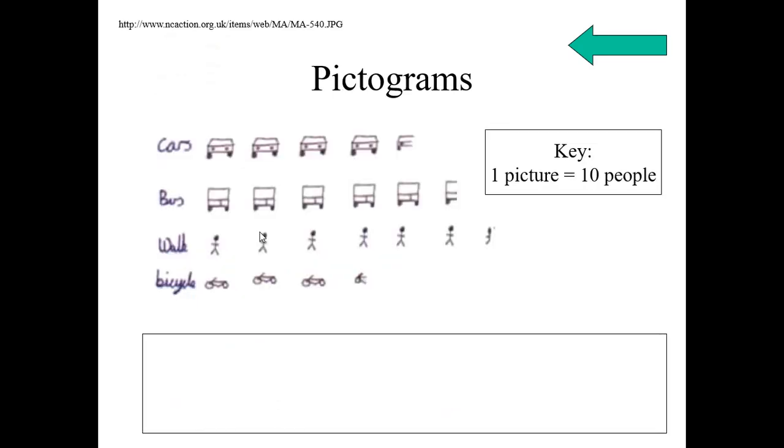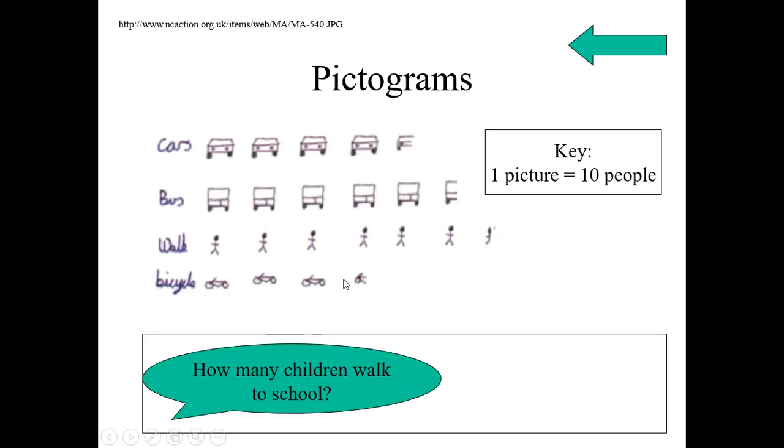Now, these are pictograms. Here, cars are drawn here and each picture is 10 people here. And buses, total 5 buses are there. And half the picture indicates half of the 10 here. And walk, 6 people are appearing on the screen. And half here. And bicycle, 3 here and half here. Now, let us discuss the data questions.